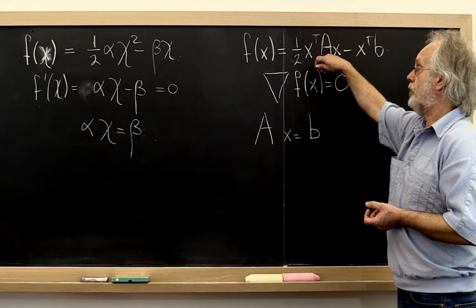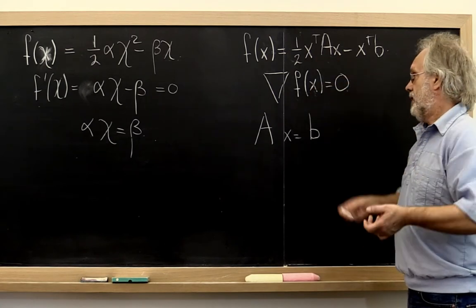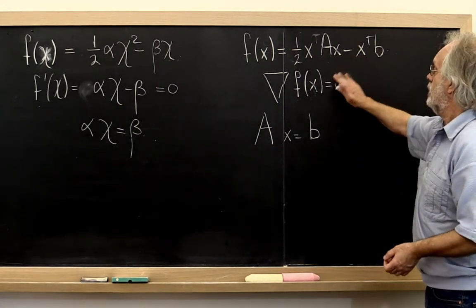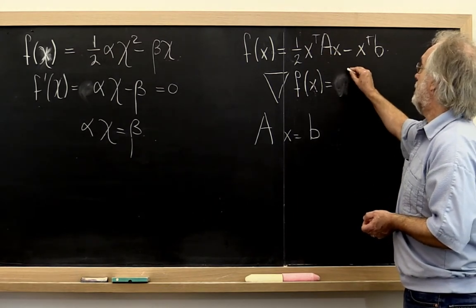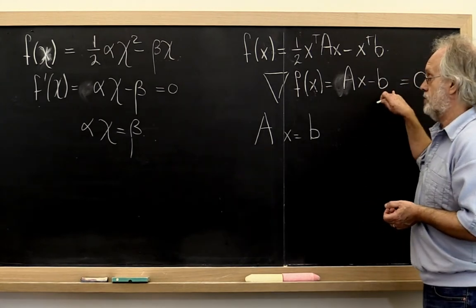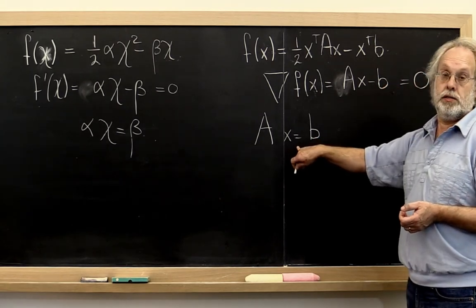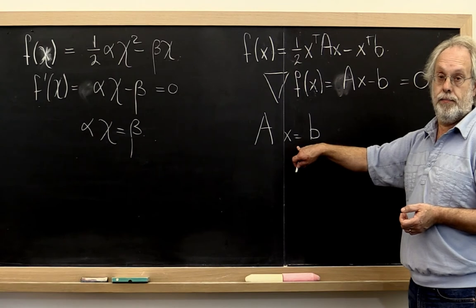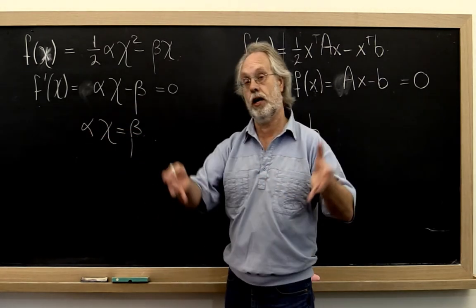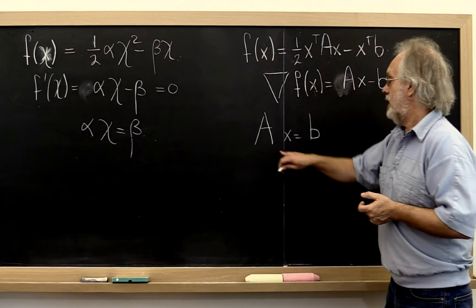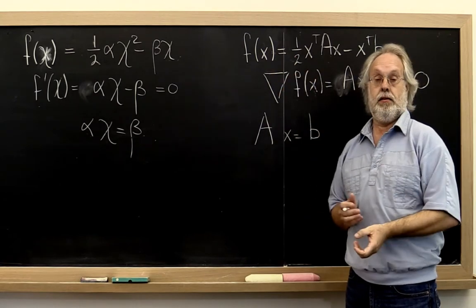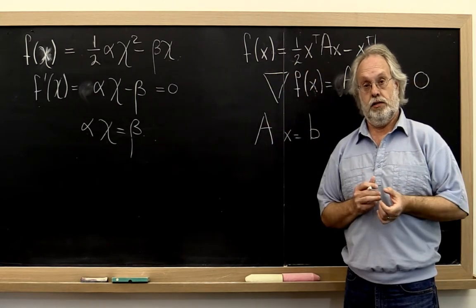If we compute the gradient of this, well, this course doesn't have multivariate calculus as a prerequisite, so therefore we're just going to give it to you. The gradient of this particular function is given by A x minus B. And lo and behold, if you set that equal to 0, then you get exactly back what we wanted to solve in the first place: A x equals B. And just like over here alpha had to be positive for it to be concave up, the matrix A has to be positive definite for this to be the equivalent of that in multiple dimensions.